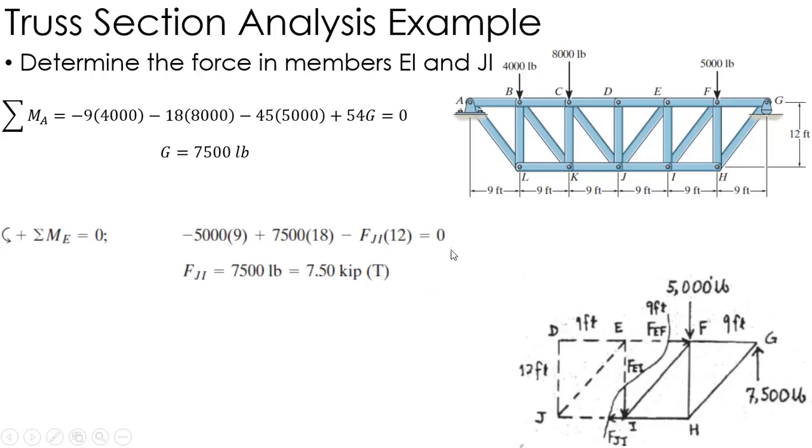EF and EI will not show up in that equation. So the force in JI equals 7500 pounds or 7.5 kips in tension.